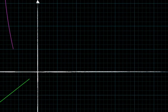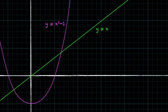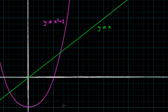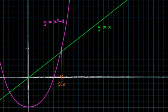We can now use a graph to determine whether our iteration is going to work or fail. The two graphs we draw are y = x and y = g(x), where g(x) = x² - 1. In order to begin the iterative procedure, we need to pick some initial value of x — let's call it x₀. Now we draw a vertical line from that point to the curve, and that gives us a value on the y-axis for g(x₀).